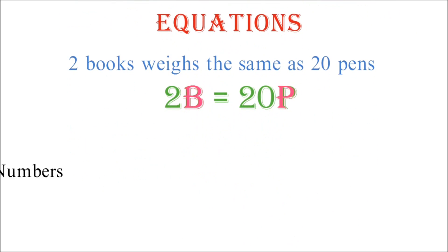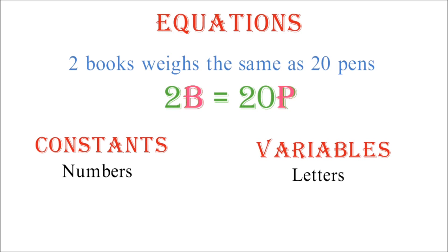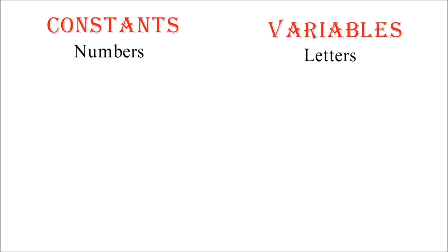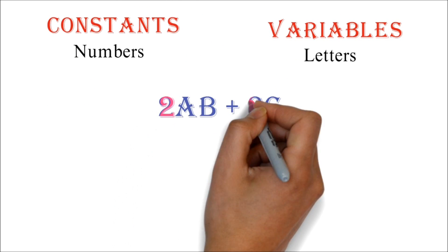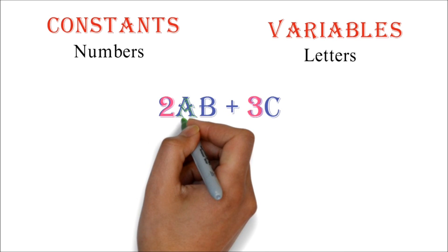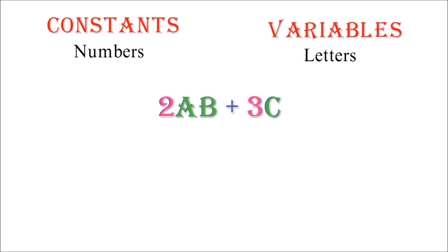In algebra, we refer to the numbers as constants and the letters as variables. This statement is not always true, but we won't go into it in this lesson. So, for 2ab plus 3c, the 2 and 3 are constants and the a, b and c are variables.